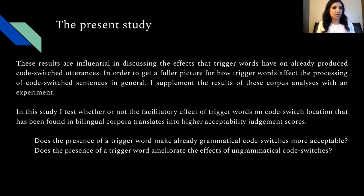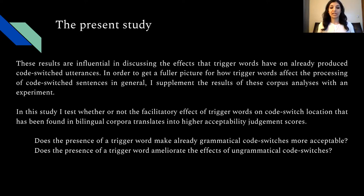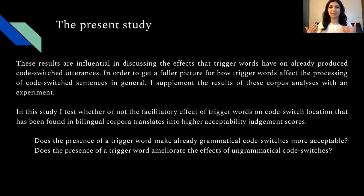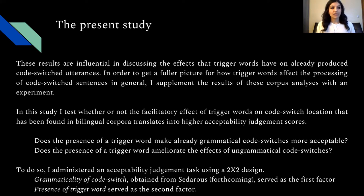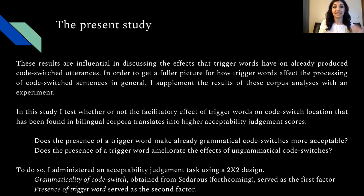In this study, I tested whether the facilitatory effect of trigger words on code switch location found in corpus analyses translates into higher acceptability judgment scores — specifically, whether a trigger word makes an already grammatical code switch more acceptable, or has an ameliorating effect on ungrammatical code switches. To do this, I administered an acceptability judgment test using a two-by-two factorial design where grammaticality of code switch served as the first factor and the presence of trigger words as the second factor.